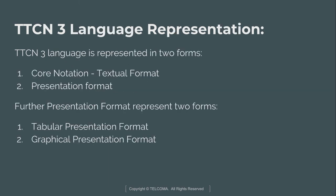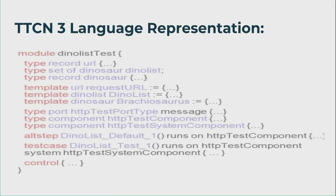Next we discuss the TTCN-3 language representation. TTCN-3 is represented in two forms: core notation and presentation format. Core notation is the textual format where we write the code. The presentation format has two sub-forms: tabular presentation format and graphical presentation format. The tabular format provides the look and feel of the existing TTCN-2 tabular format for test developers. The graphical presentation format is an extended version of MSC — Message Sequence Chart — and specifies test scenario behavior.